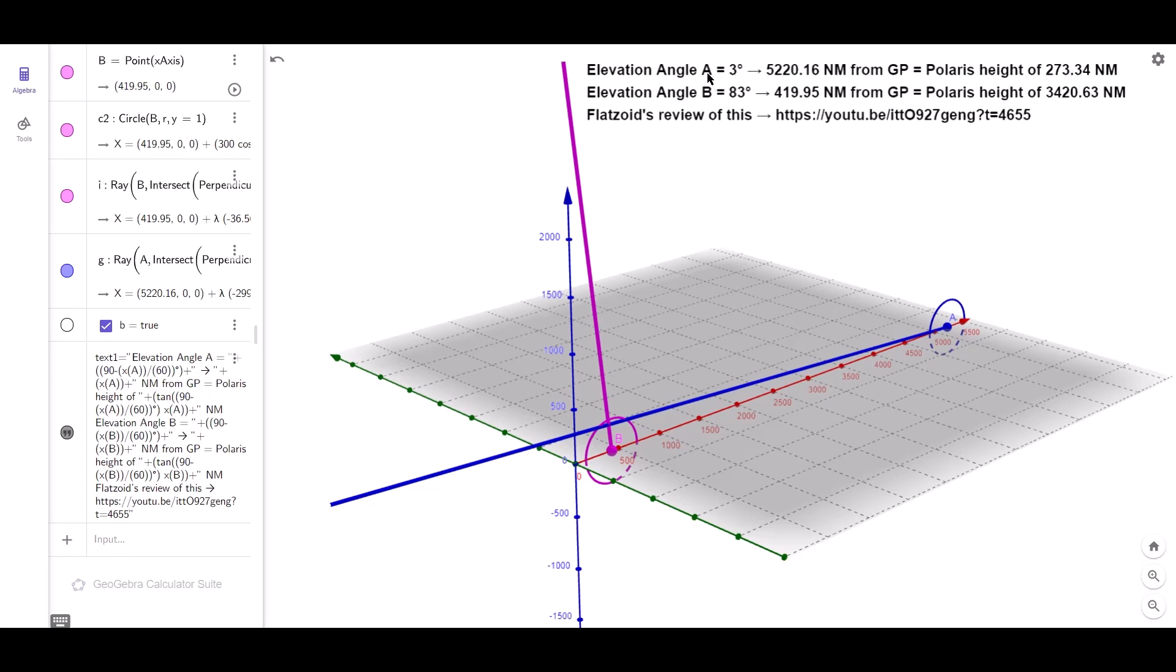So in Mike's case, for three degrees and 5220 nautical miles from the GP, his Polaris height will be tan three degrees multiplied by the distance, will give us 273. Same goes for Michelle. Tan 83 multiplied by her distance from the GP will give her a height for Polaris of 3420.